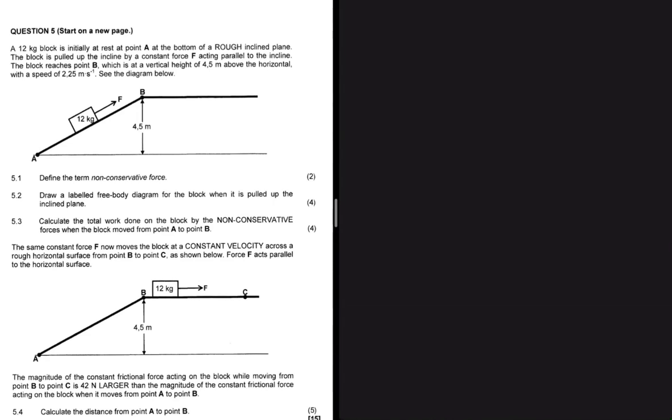We know that we have a friction force. The block is pulled up the incline by a constant force F acting parallel to the incline, so we don't have to resolve the force. The block reaches point B, which is at a vertical height of 4.5 meters above the horizontal with a speed of 2.5 meters per second.